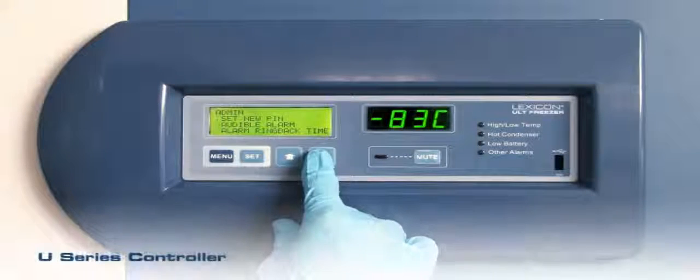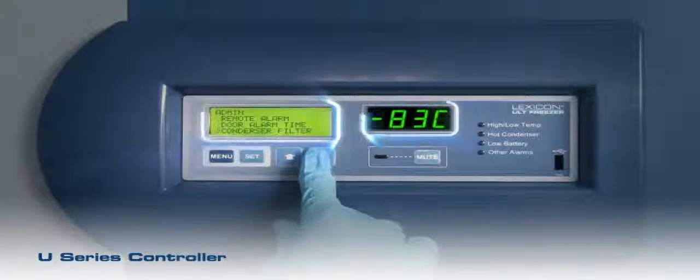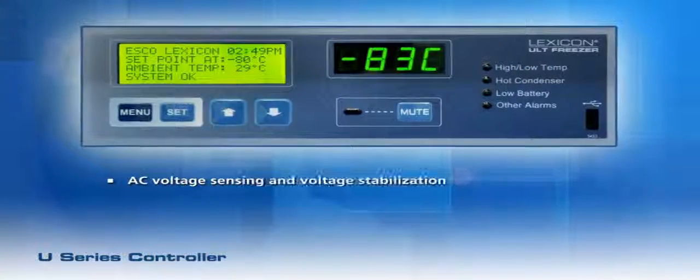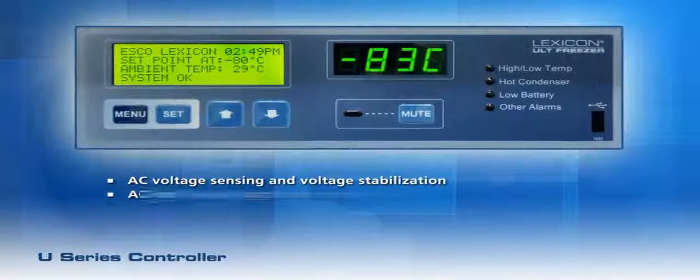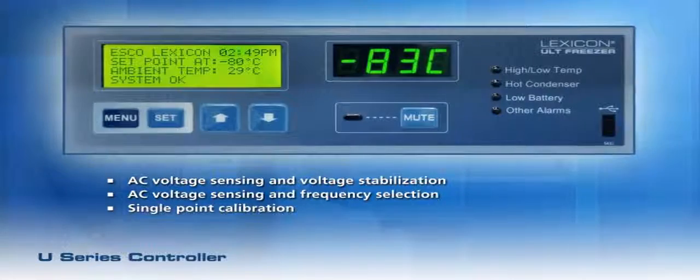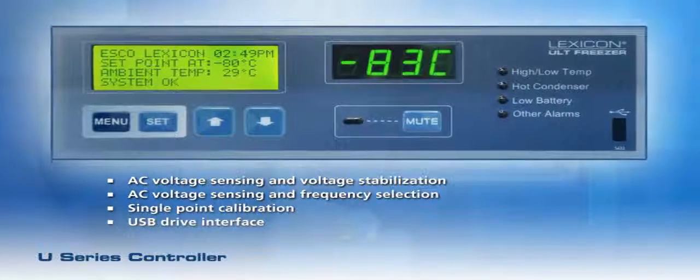U-series controller provides a more user-friendly function using a dual LCD LED display. U-series controller offers new features including AC voltage sensing and voltage stabilization, AC voltage and frequency selection, single point calibration and USB drive interface to download data from flash memory.